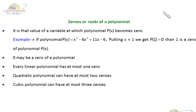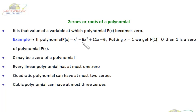Let's discuss zeros or roots of a polynomial. A zero or root of a polynomial is a value of a variable at which the polynomial p(x) becomes 0. For example, if p(x) = x³ - 6x² + 11x - 6, and I put x = 1 and get the value as 0, then 1 is a zero or root of the polynomial.